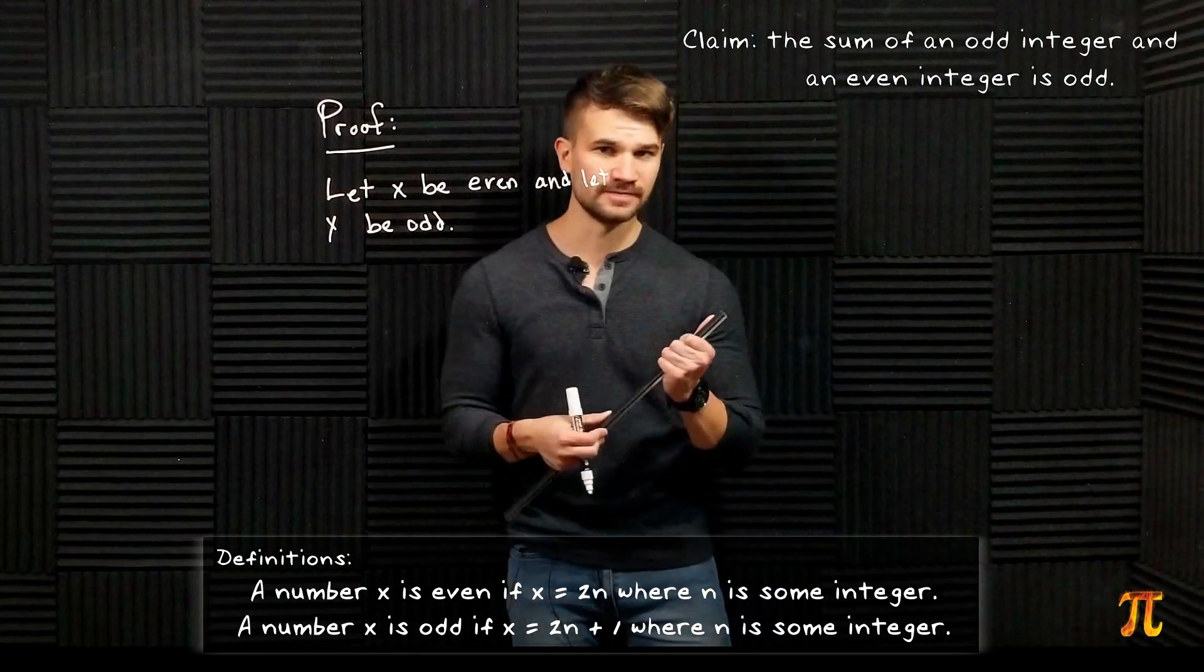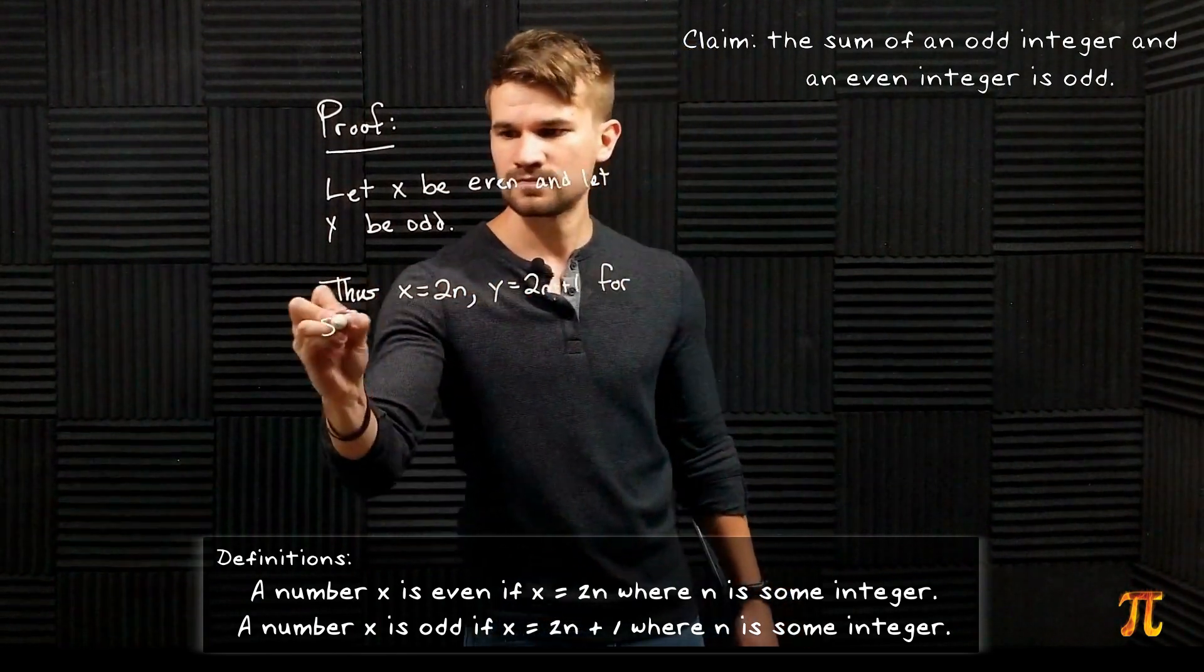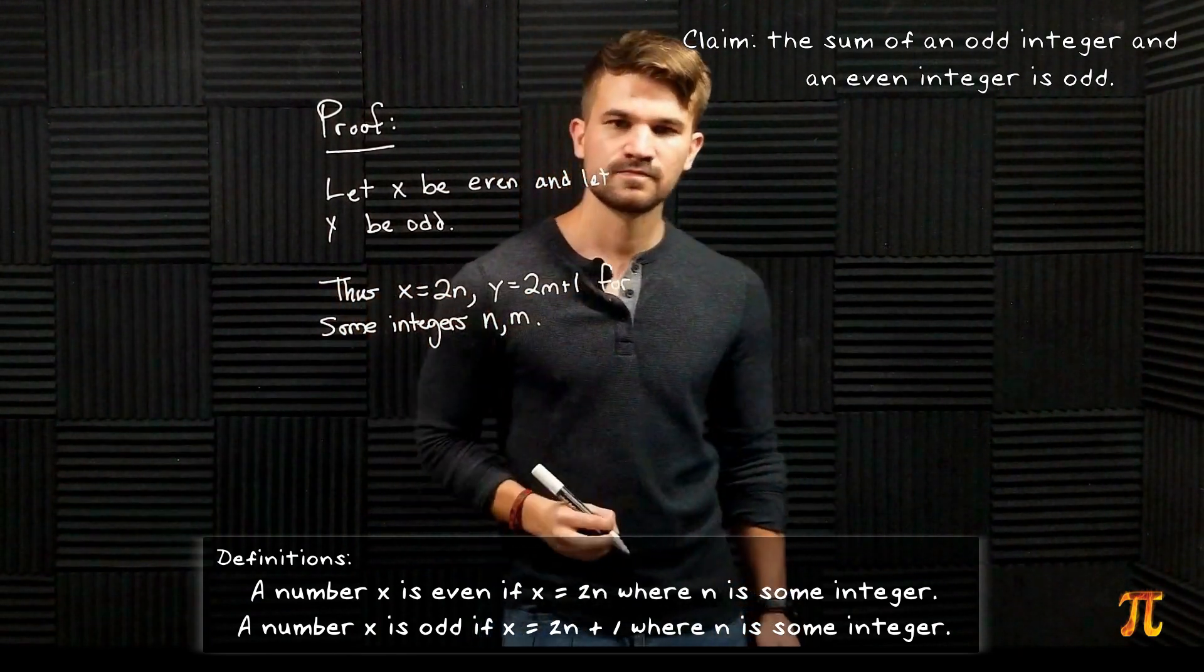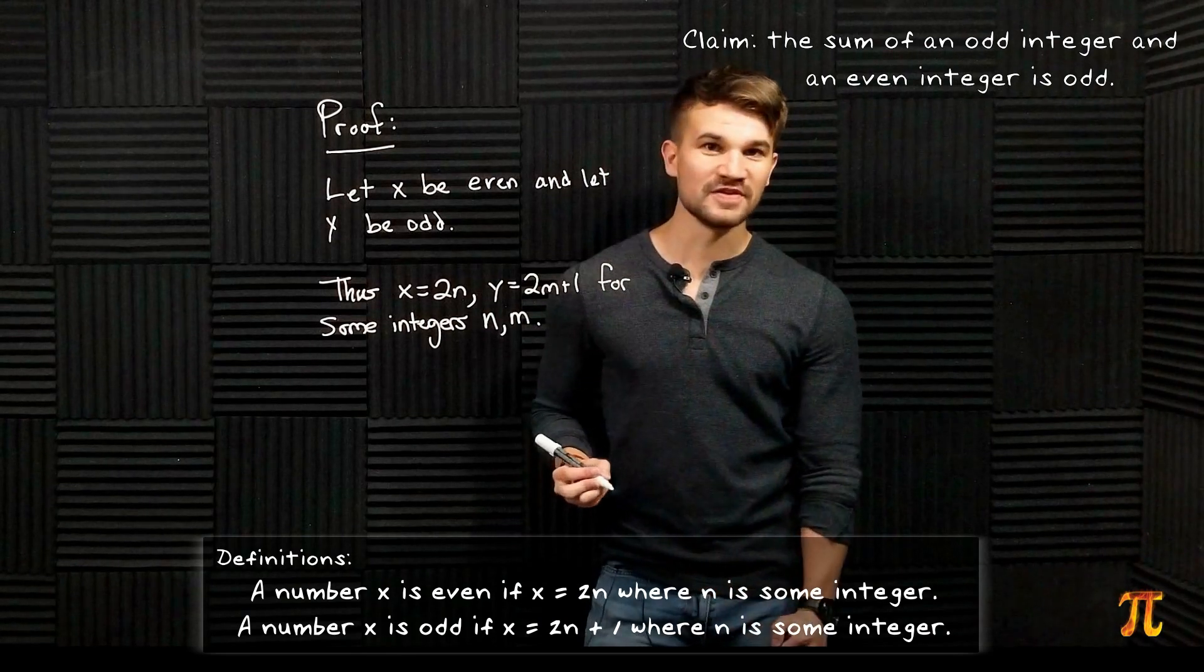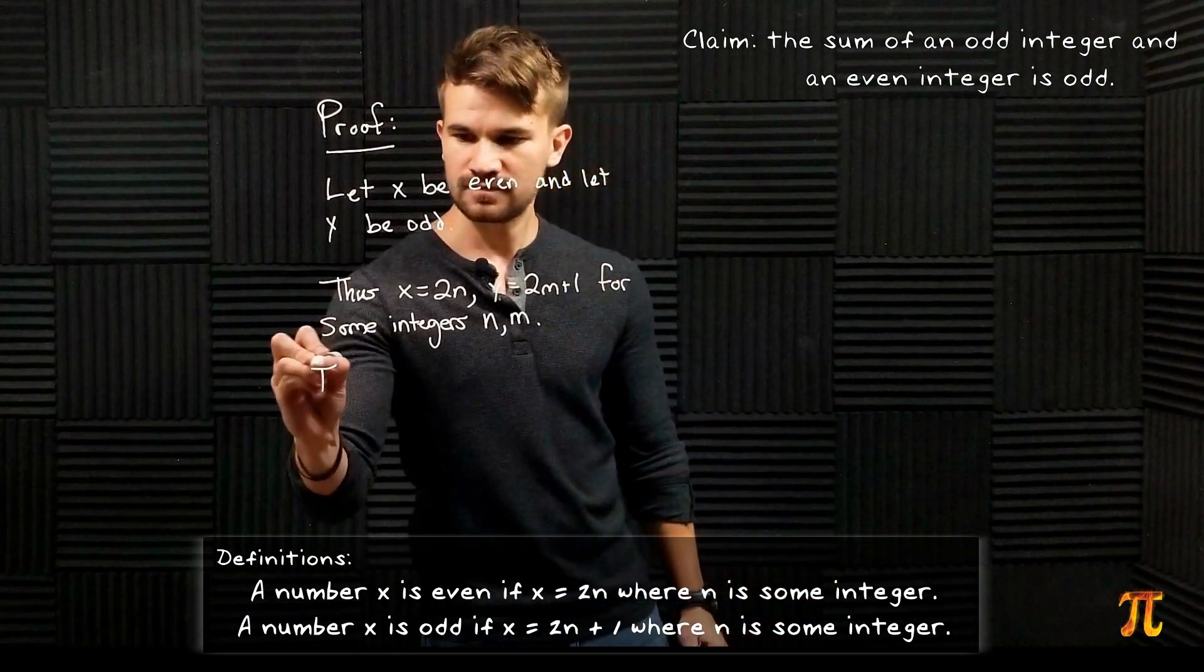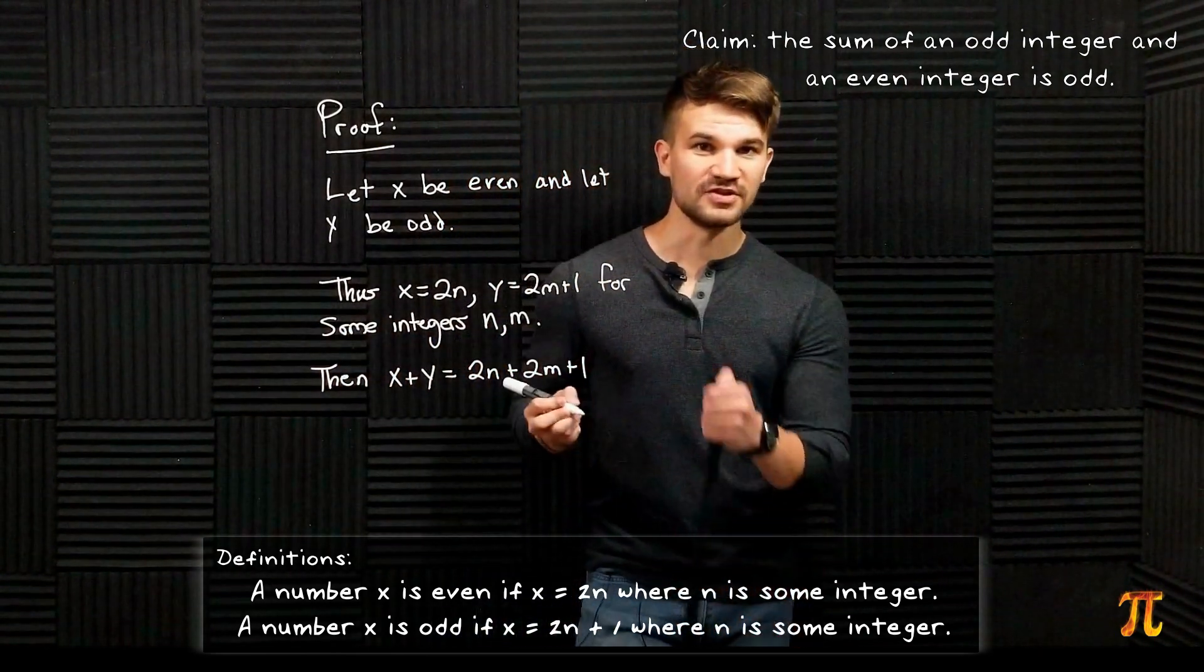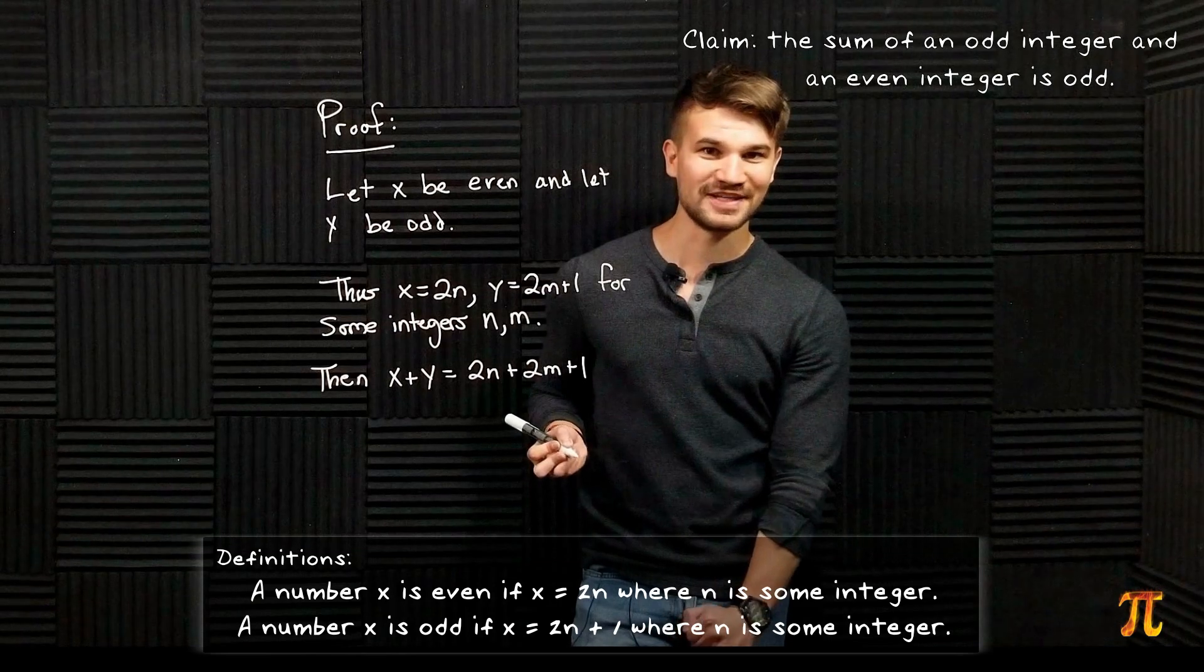Now we want to know something about the sum of these two numbers, so we'll add x and y. Now by the distributive property I can factor out a 2 here.